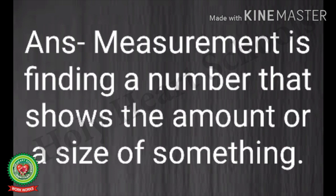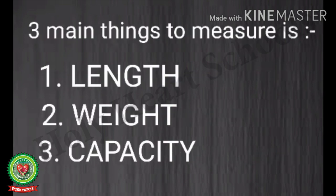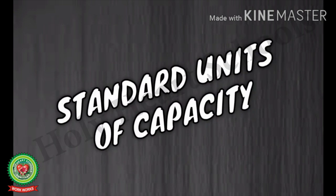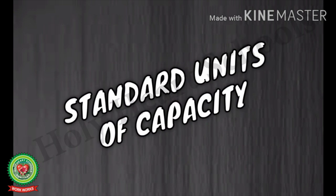Measurement is finding a number that shows the amount or size of something. The three main things to measure are length, weight, and capacity. Today we will learn about capacity — we see how much a container can hold, and it is usually used to measure liquids. To measure the capacity of any container, we use standard units.